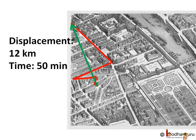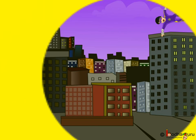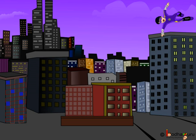Now which quantity to consider to know how fast you went — distance or displacement? In general we consider distance because we don't have superpowers. We cannot just fly in a straight line to our destination. We have to go along the road which is not always straight.